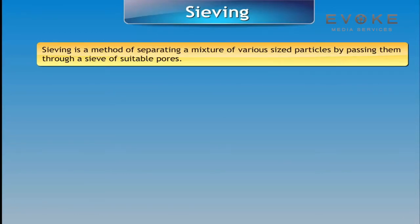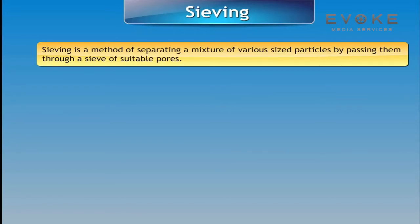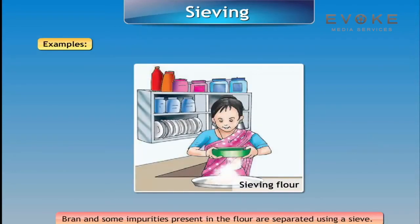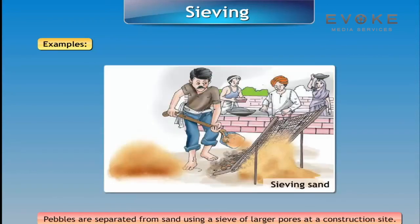Sieving: Sieving is a method of separating a mixture of various sized particles by passing them through a sieve. We can use sieving only if the components of a mixture are of different sizes. For example, bran and other impurities in flour are separated using a sieve, and pebbles are separated from sand using a sieve of larger pores at a construction site.